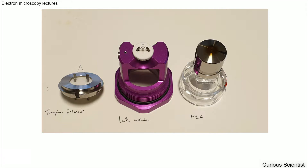If we start from the left, this is a small piece of tungsten filament. You can see that the filament goes up and down, and it's welded on the surface. I will show you a closer picture about this. In the middle we have all the interesting parts on this ceramic disc, on the white part. The purple part is just the holder. This is the lanthanum hexaboride source.